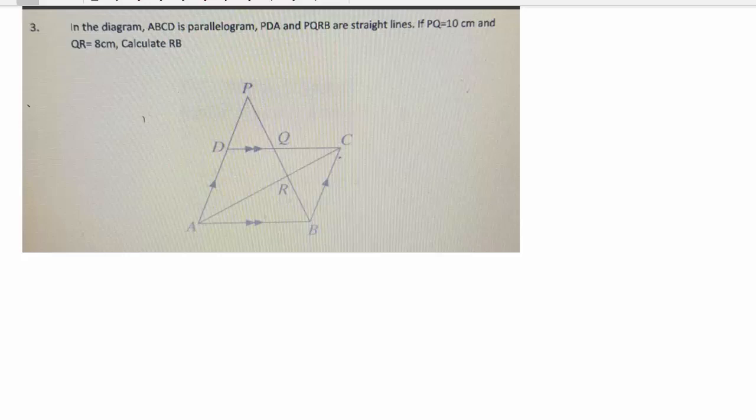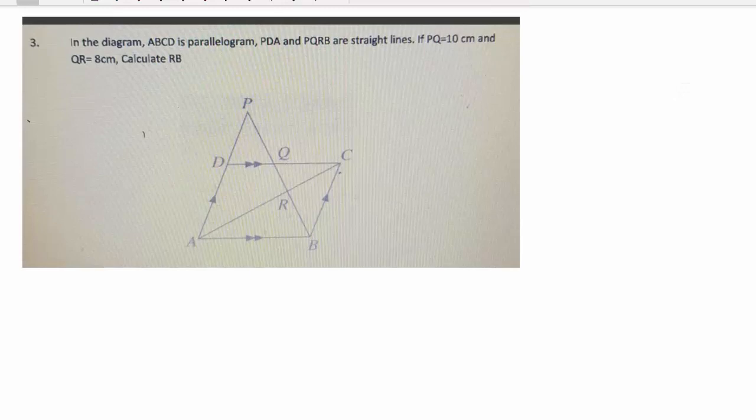So we've got a parallelogram here and we've got some straight lines, as the problem says. And PQ is 10, QR is 8, and RB is what we're looking for, so I'm going to call it X.